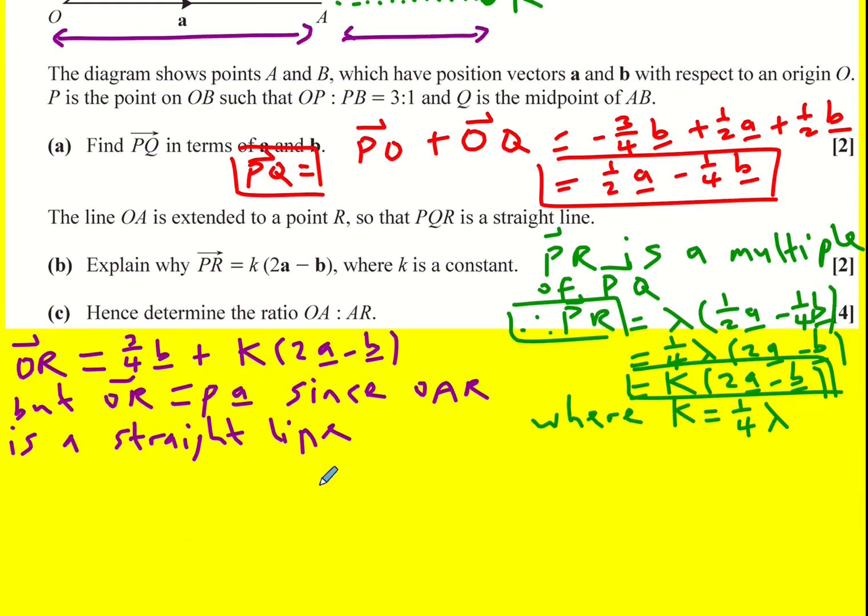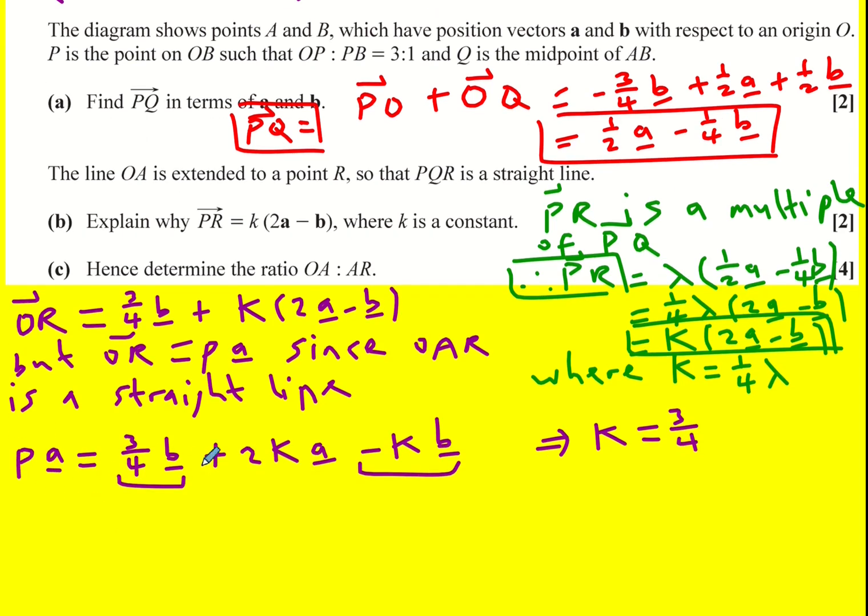It must be that ρa equals three quarters b plus 2ka minus kb. And this implies that k has to equal three quarters because these are going to cancel out because the left-hand side is only a multiple of a. Essentially I'm equating the coefficients of b.